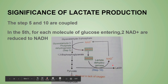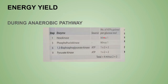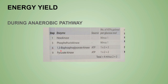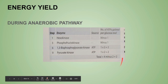Now the important question: the energy yield from glycolysis. In the anaerobic pathway, steps 1 and 3 each consume one ATP (total 2 ATP used). Steps 6 and 9 are substrate-level phosphorylations producing a total of 4 ATPs (2 each), since we have two molecules of glyceraldehyde-3-phosphate. Net result for anaerobic glycolysis: 4 minus 2 equals 2 ATPs produced.